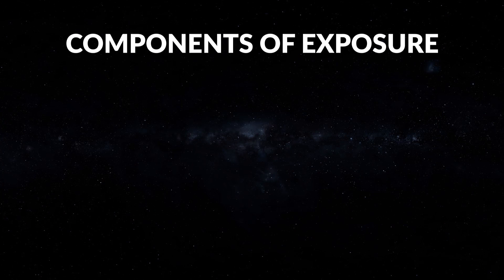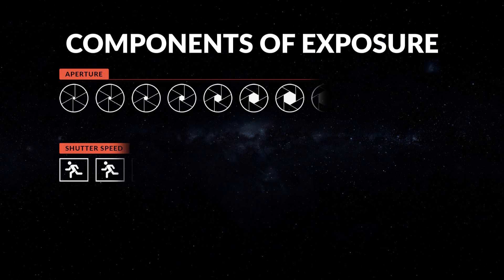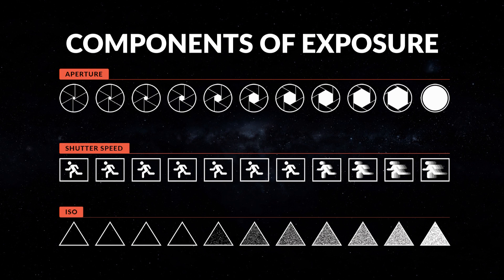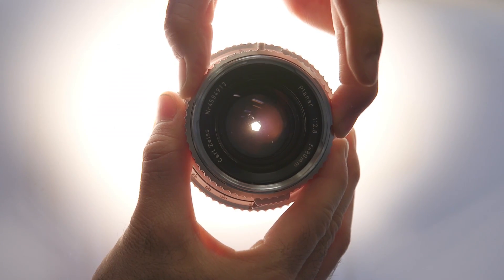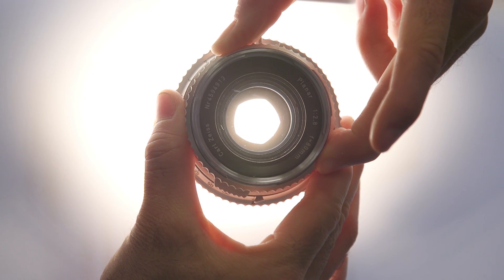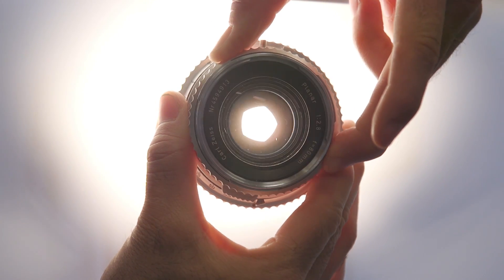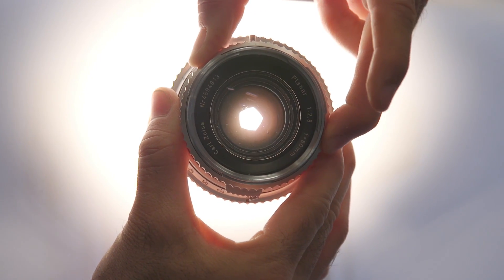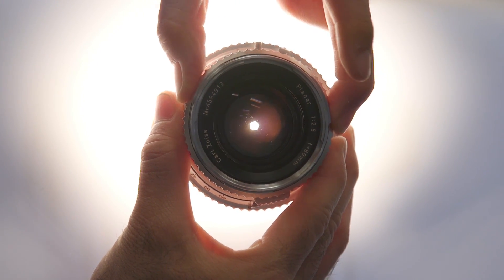So to start off, what is Aperture? It's one of the three fundamental components that controls the amount of light that comes into your camera — Aperture, shutter speed, and ISO. Inside your lens, there's a mechanism known as an iris, which controls the opening of the lens that lets light into the camera. A larger opening will allow more light, and a smaller opening lets less light through.